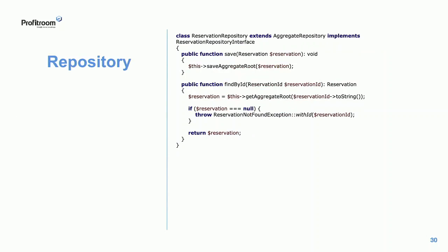Skoro mamy eventy, agregaty i stan, chcemy ten stan zapisać – dużo pomaga zewnętrzna biblioteka. Dzięki niej repozytorium wygląda bardzo prosto: mamy metodę save i find. Zapisując agregat, nie zapisujemy jednego rekordu – zapisujemy sekwencję zdarzeń. Co robi dla nas Proof? Wyciąga wszystkie zdarzenia z agregatu, czyli wszystkie zmiany biznesowe, szuka odpowiedniego miejsca zapisu (są różne strategie) i zapisuje. Przy odczycie szuka miejsca zapisu, wyciąga wszystkie eventy i po kolei nakłada je na agregat, doprowadzając go do pożądanego stanu. Korzystanie z zewnętrznych bibliotek oszczędza dużo czasu.